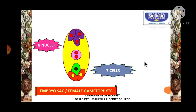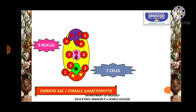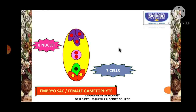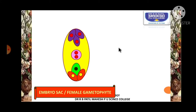To count the nuclei you have to count the dotted structures — there are 8 nuclei. We are going to understand how this embryo sac becomes 7-celled and 8-nucleated under the heading development of the female gametophyte. The region where the egg is present is the micropylar end, and the region opposite to the micropyle is called chalaza.